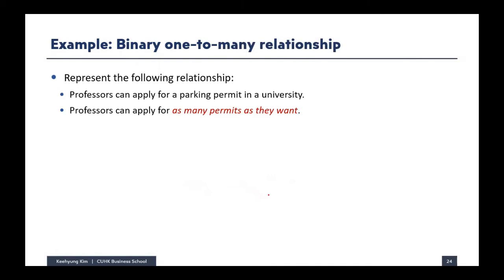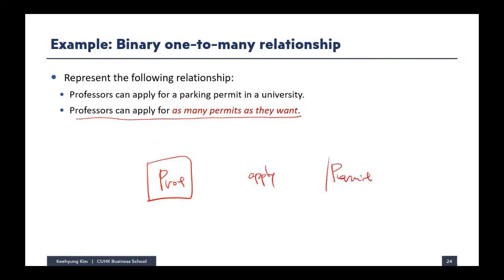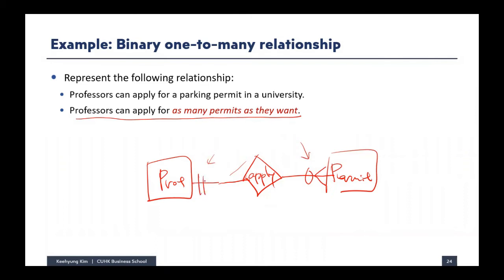If the university changes the rule so a professor can apply for as many permits as they want, then from the professor's perspective, minimum zero and maximum many permits. From the permit's perspective, still minimum one and maximum one professor. This becomes a binary one-to-many relationship.